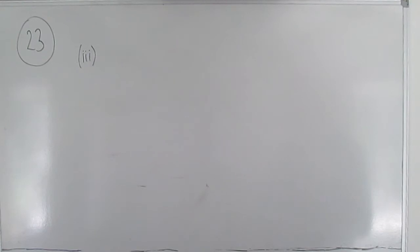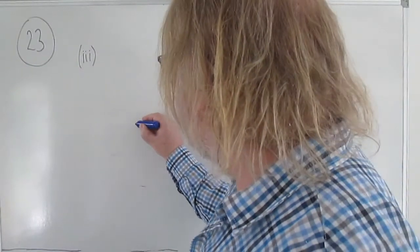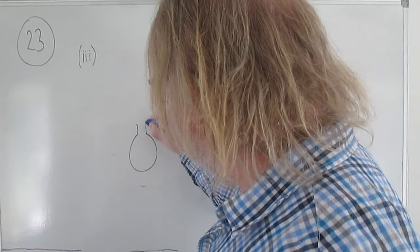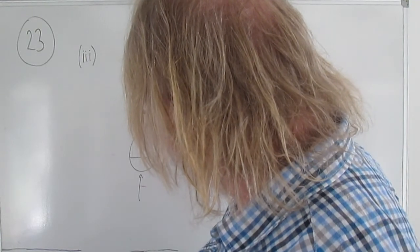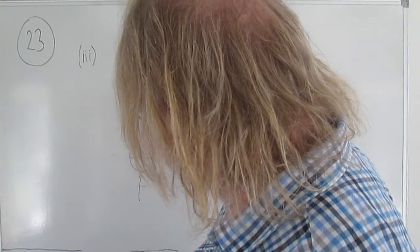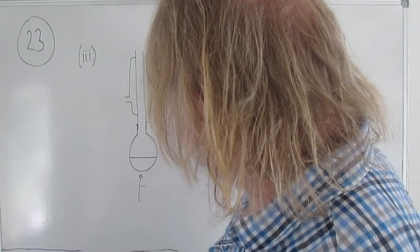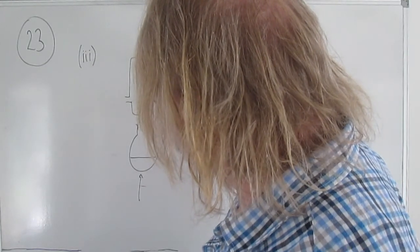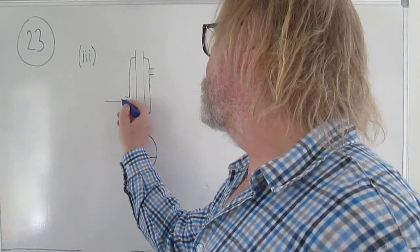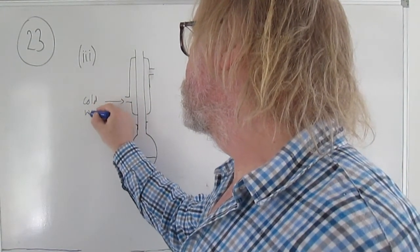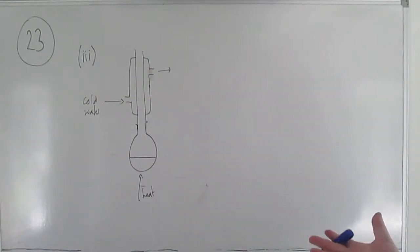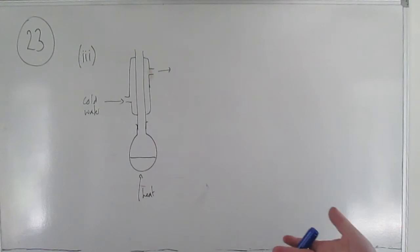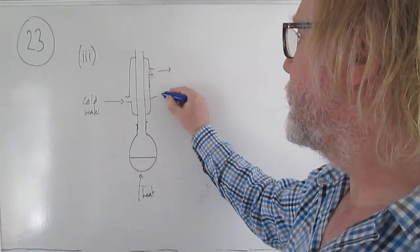Part 3 asks you to explain the term 'refluxing' — or 'heating under reflux' is the more formal way of saying it. You have a flask being heated with the reaction mixture inside. The crucial thing in refluxing is that you put a condenser in the top of the flask. The condenser has a water jacket around the outside of the inner tube, with cold water flowing in and out. They don't ask for the diagram here, but if you draw one you must label the condenser and round-bottom flask.